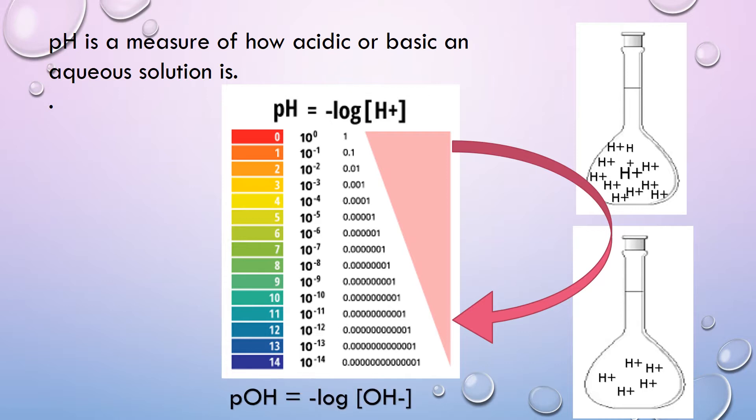As we move from 10 raised to power minus 7 to 10 raised to power minus 14, the hydrogen ion concentration will be less and the hydroxyl ion concentration will be maximum.